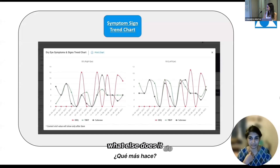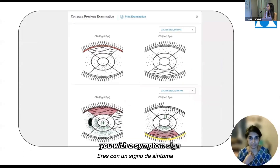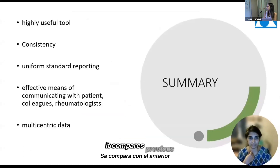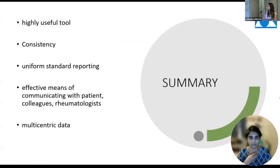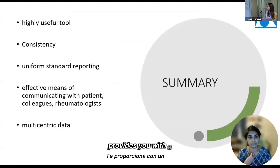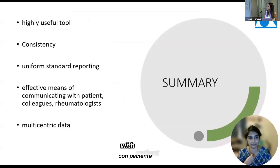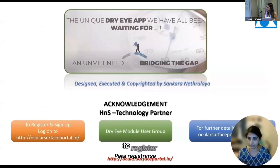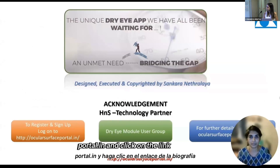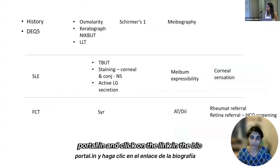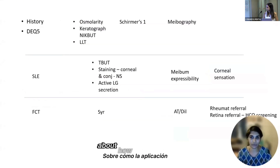The application also provides a symptom-sign trend chart and compares previous examinations. To summarize, it is a highly useful tool providing a uniform standard reporting system — an extremely effective means of communicating with patients, colleagues, and rheumatologists. To register, please log on to ocularsurfaceportal.in. That was a short overview of how the application actually works in practice.